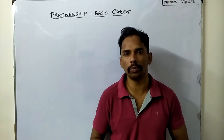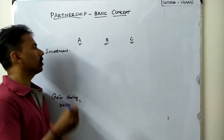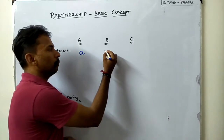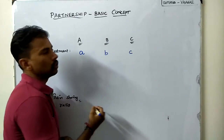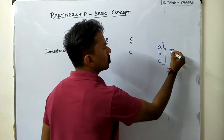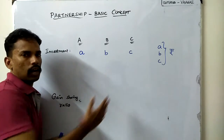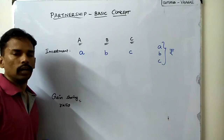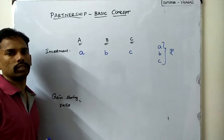Let us see different cases in partnership problems. Say there are three people A, B, and C going to start a business. A is going to invest 'a' rupees, B is going to invest 'b' rupees, and C is going to invest 'c' rupees. So a, b, c are their respective investments. Now let us assume that they are all going to invest at the start of the business itself.